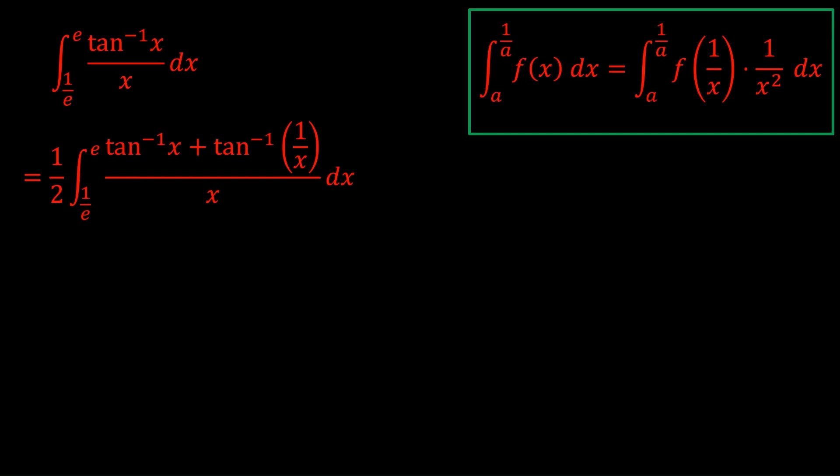Well, tan⁻¹(x) + tan⁻¹(1/x) actually has a very nice identity. It's equal to π/2 for any positive x value. If you want to know why, check out my video in the description.